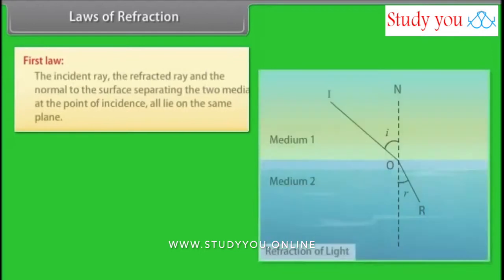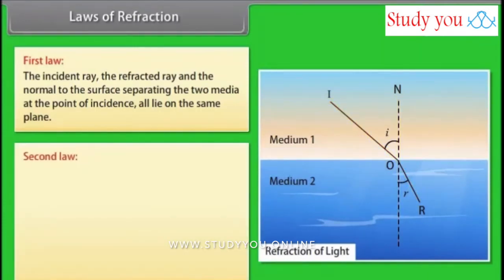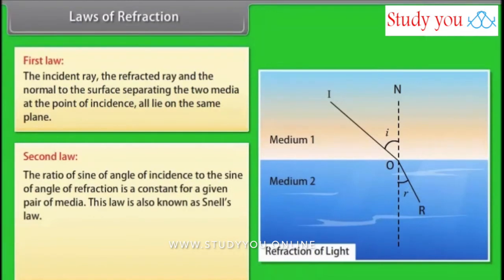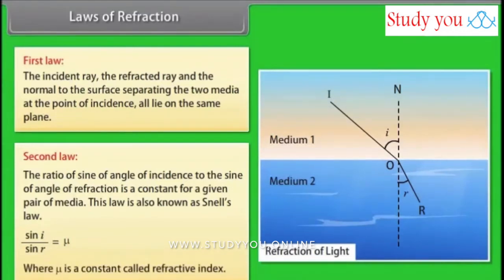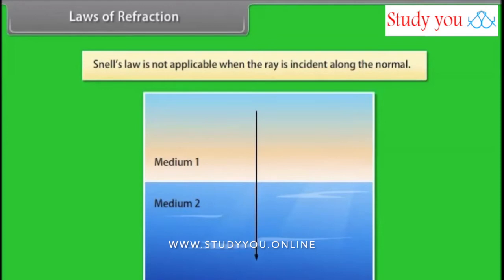Laws of refraction: There are two laws. First law: the incident ray, the refracted ray, and the normal to the surface separating the two media at the point of incidence all lie on the same plane. Second law: the ratio of the sine of the angle of incidence to the sine of the angle of refraction is a constant for a given pair of media. This law is also known as Snell's law: sin(i)/sin(r) = μ, where μ is the refractive index. Snell's law is not applicable when the ray is incident along the normal.